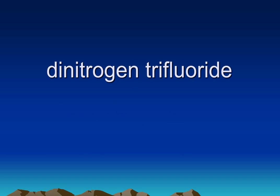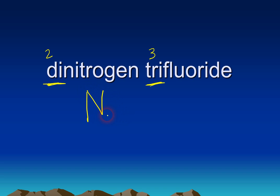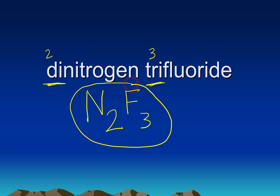One last example: dinitrogen trifluoride. Notice this is very different from the other examples because it has numerical prefixes — di means two and tri means three. When a compound has numerical prefixes we don't use the ion chart; we just use the prefixes directly. Dinitrogen is N₂ and trifluoride is F₃, so the answer is N₂F₃. To summarize: if we have numerical prefixes, use those; if we have ions, use the ion chart. This concludes our discussion about writing ionic formulas.